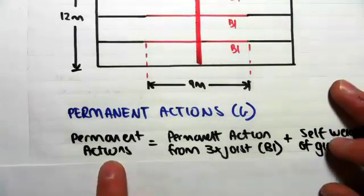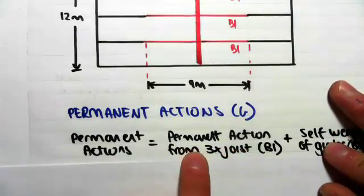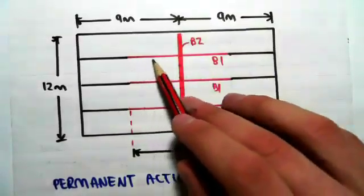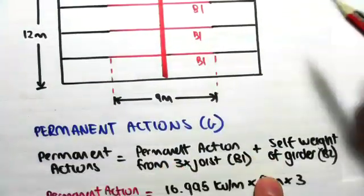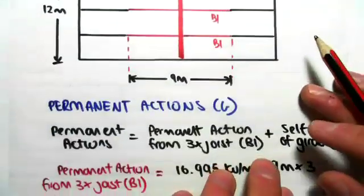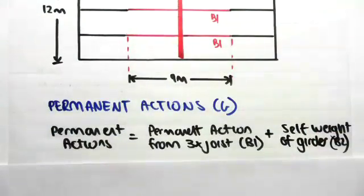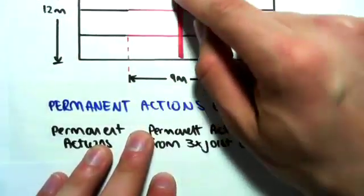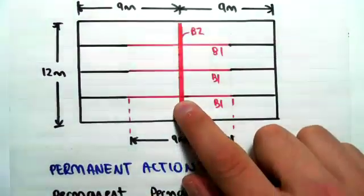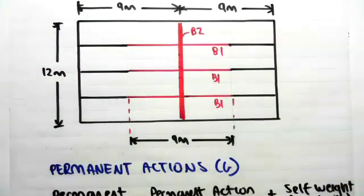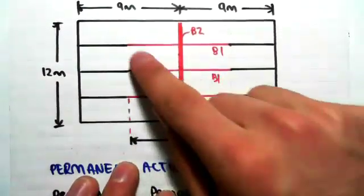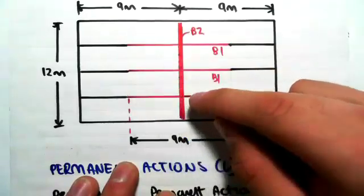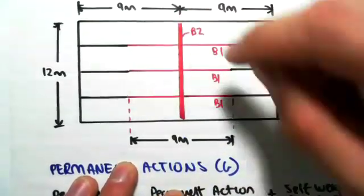The permanent action in the girder is the permanent action from three joists above, plus the self-weight of the actual girder. I hope you're understanding the load pattern: we first found the loading in the slab, that was transferred into the joists, and now the loading in the joists is transferred to the beam. We went from area — a slab — to joists, and now these joists are going into this girder.